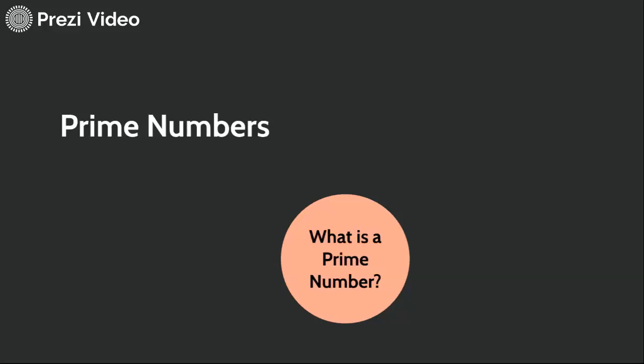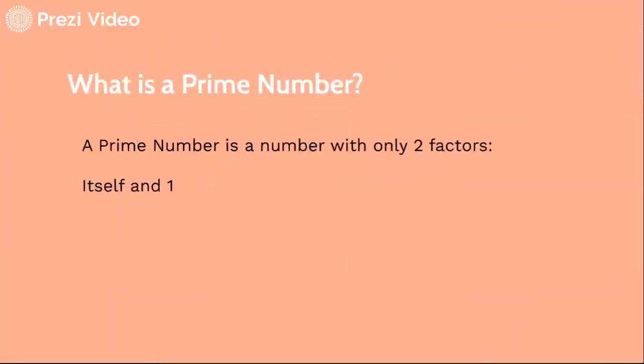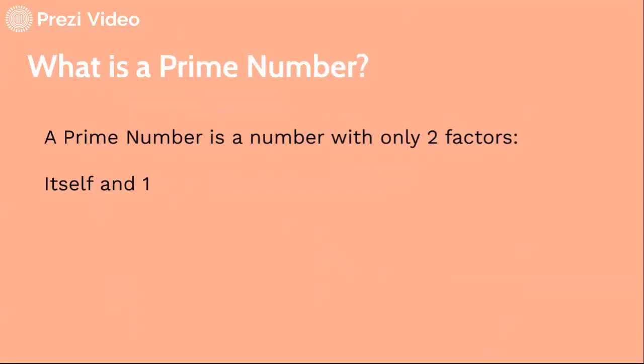Prime numbers. What is a prime number? A prime number is a number with only two factors, itself and one.